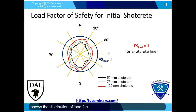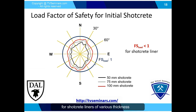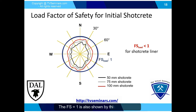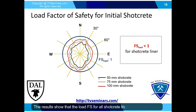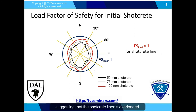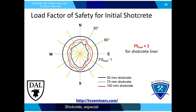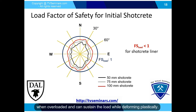This figure shows the distribution of load factor of safety along the shaft boundary for shotcrete liners of various thicknesses, including 50 mm, 75 mm, and 100 mm. The factor of safety equal to 1 is shown by a blue circle. The results show that the load factor of safety for all shotcrete liners is less than unity, suggesting the liner is overloaded. However, overloading does not necessarily mean complete failure, as young-age shotcrete behaves in an elastoplastic manner when overloaded and can sustain load while deforming plastically.